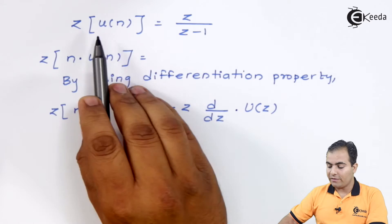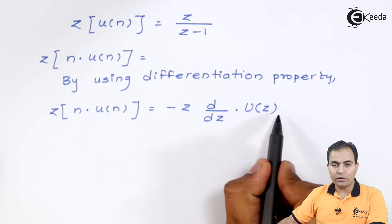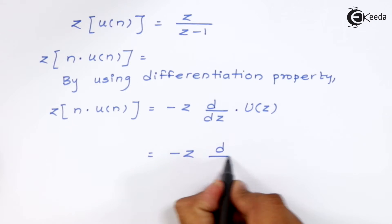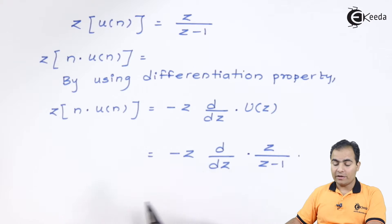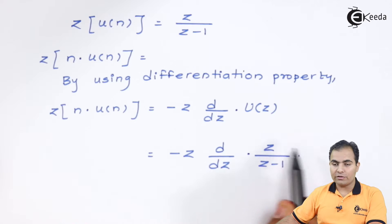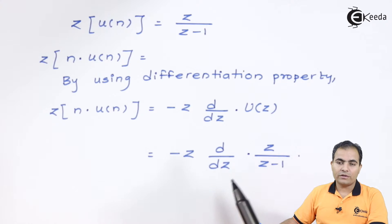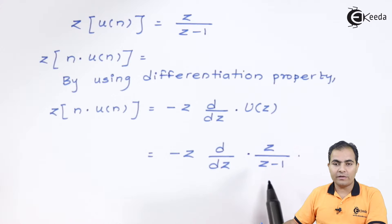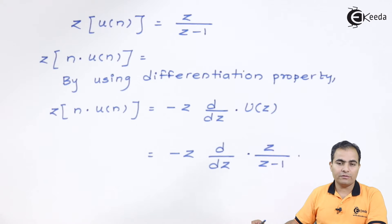So we place U(z) = z/(z−1) and the next step is to find the differentiation of z/(z−1). We use the u/v differentiation formula: [v · d(u) − u · d(v)] / v². That was the formula.